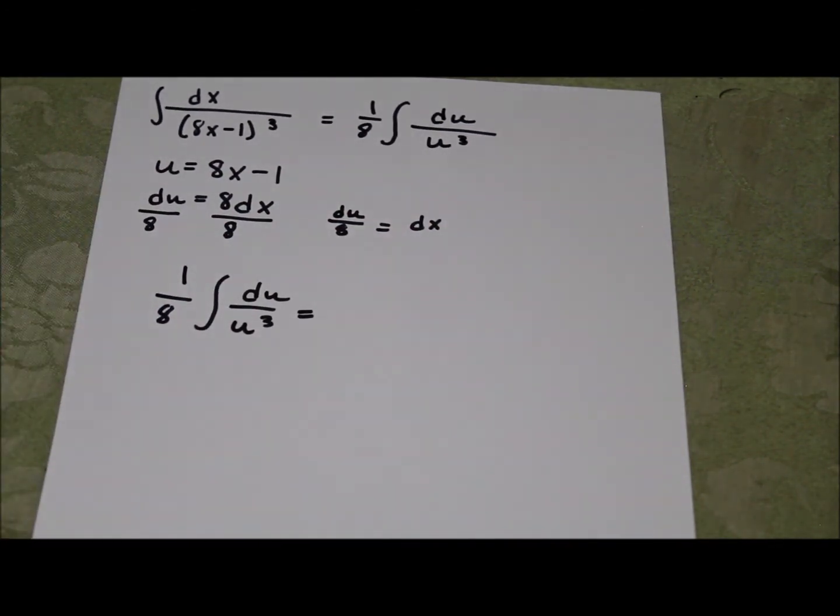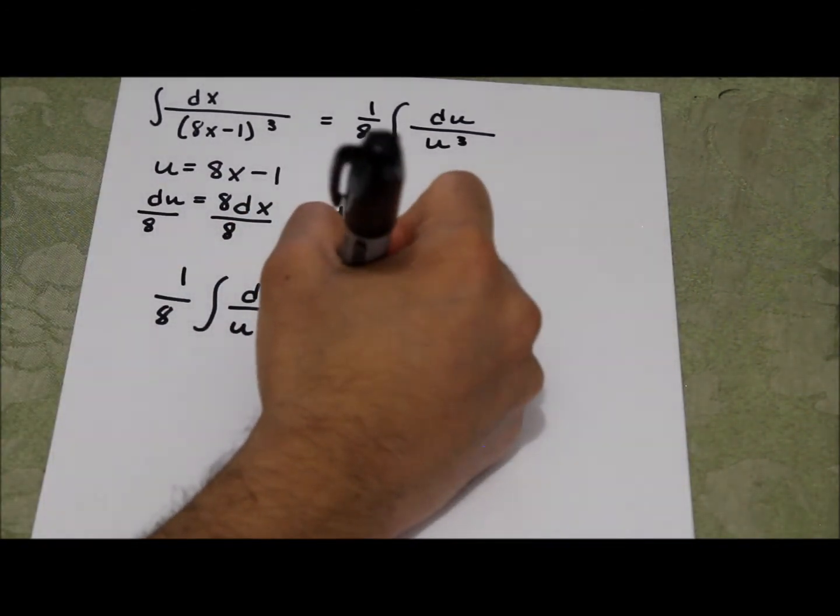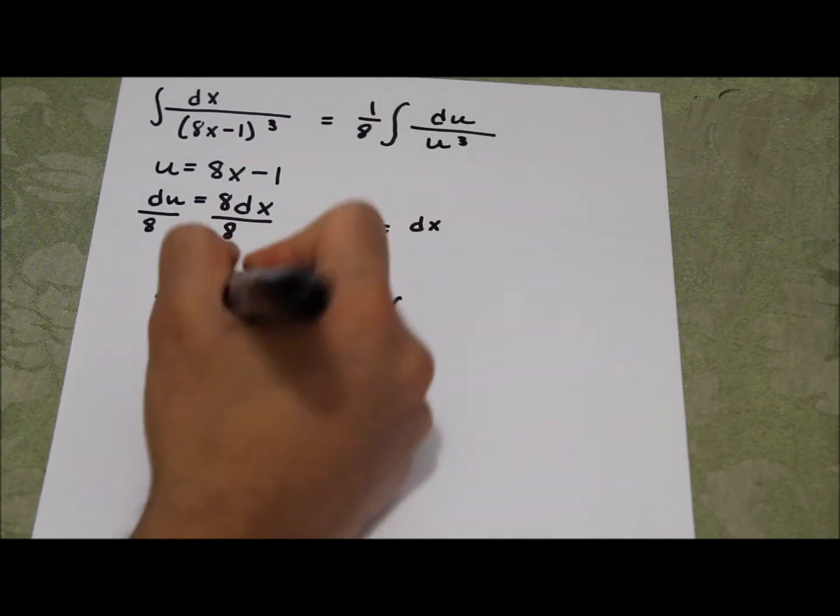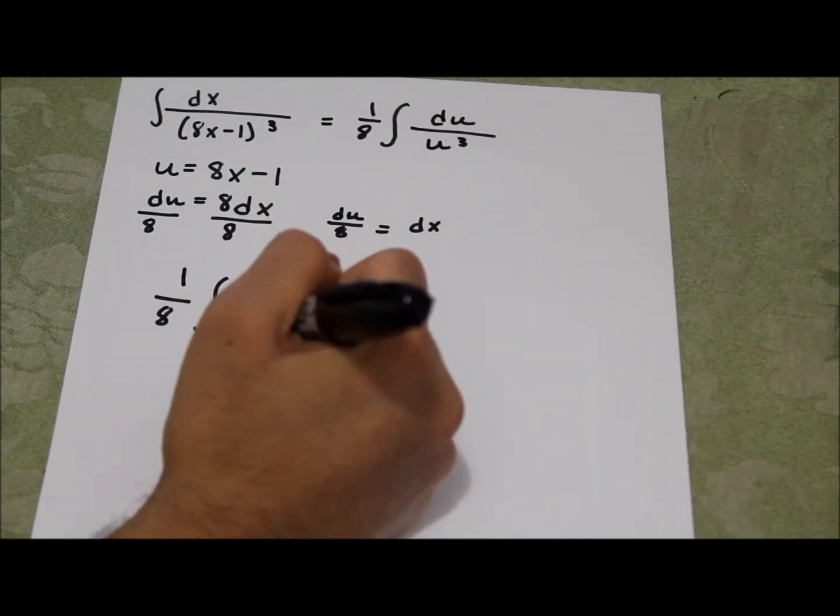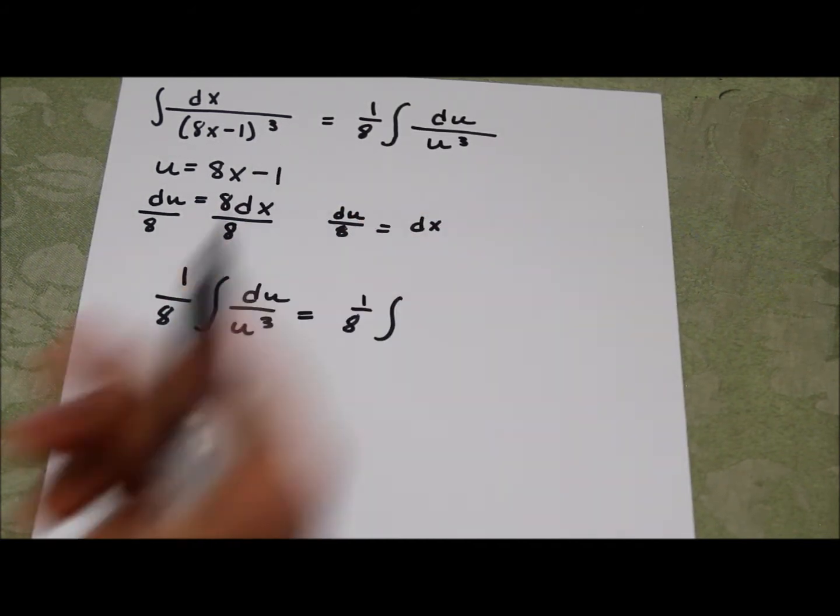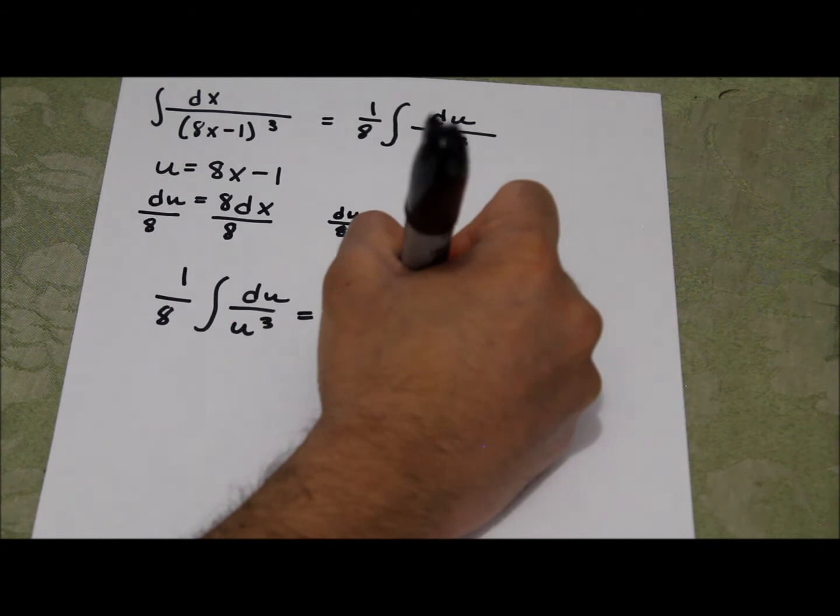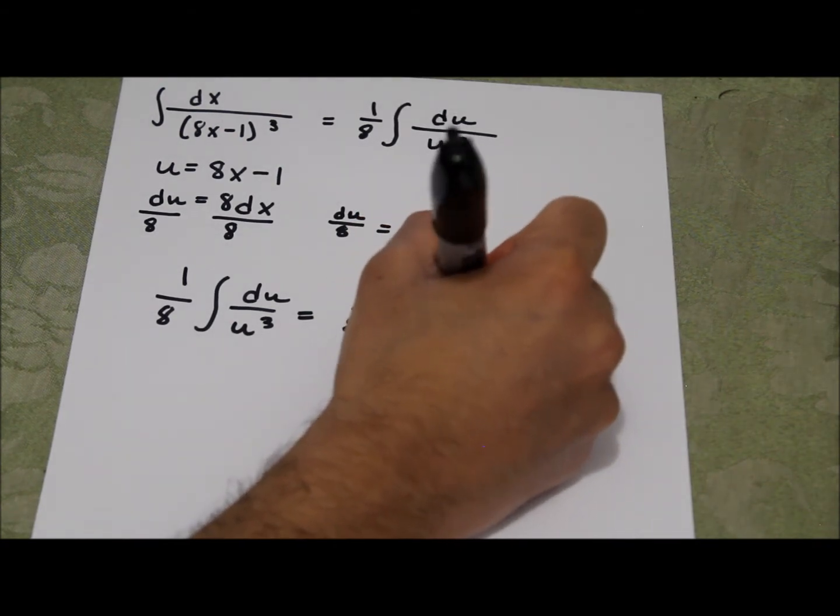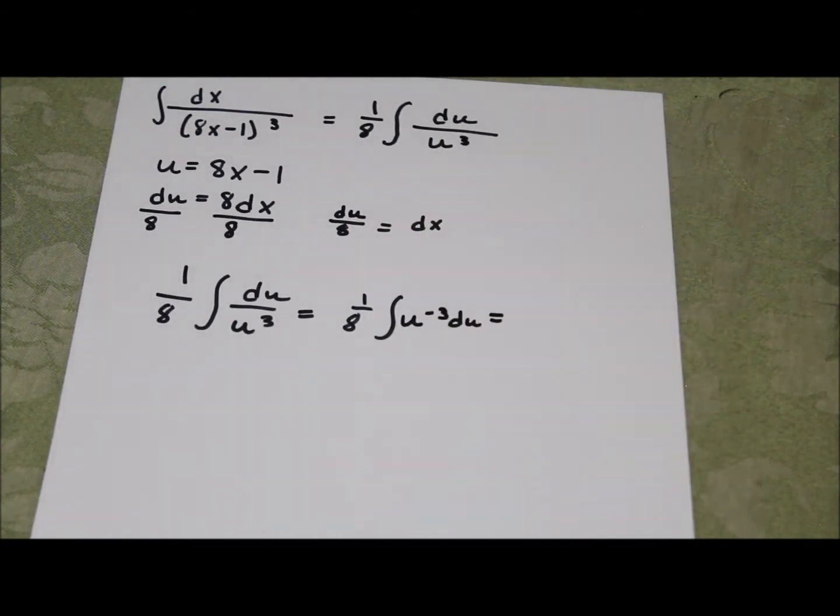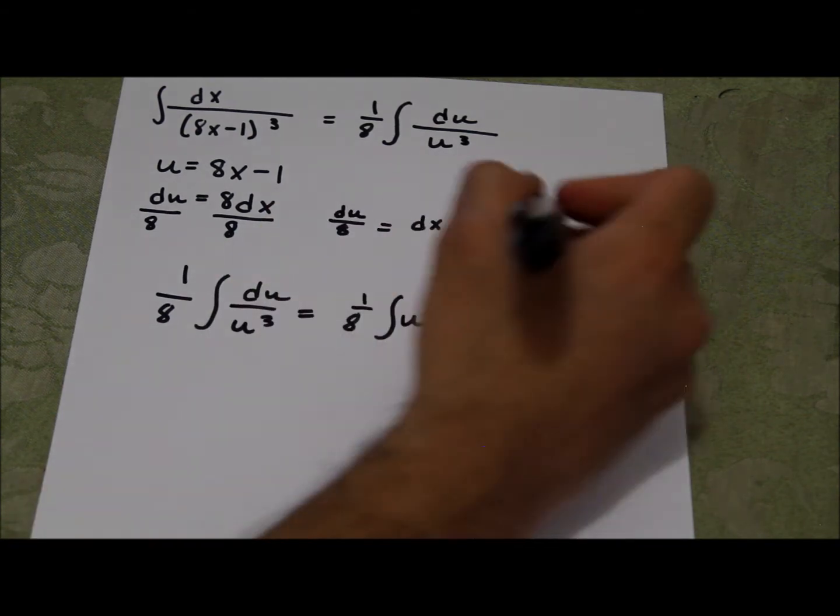To make it even easier, what I'm going to do is take the u. This is 1 over u cubed. So as we learned in algebra, if you take u to the negative 3, that's the same as 1 over u cubed. So I would write u to the negative 3 du. And now I can just use the rules of integration.